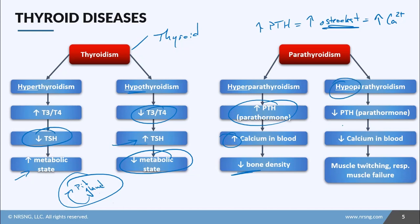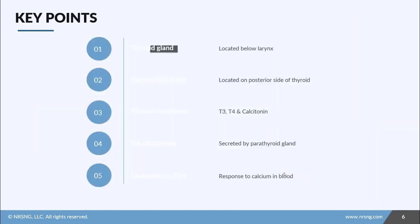Hypoparathyroidism is a decrease in parathyroid hormone, which results in a decrease in calcium in the blood. This leads to muscle twitching, respiratory failure, and muscle failure. There are excellent lessons on all of these disease processes, so I encourage you to check those out.